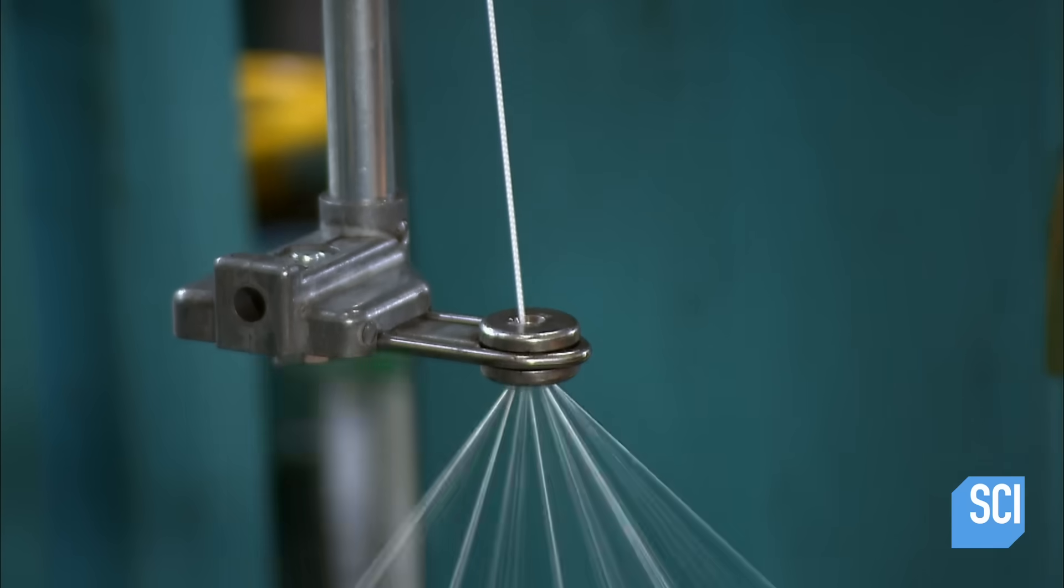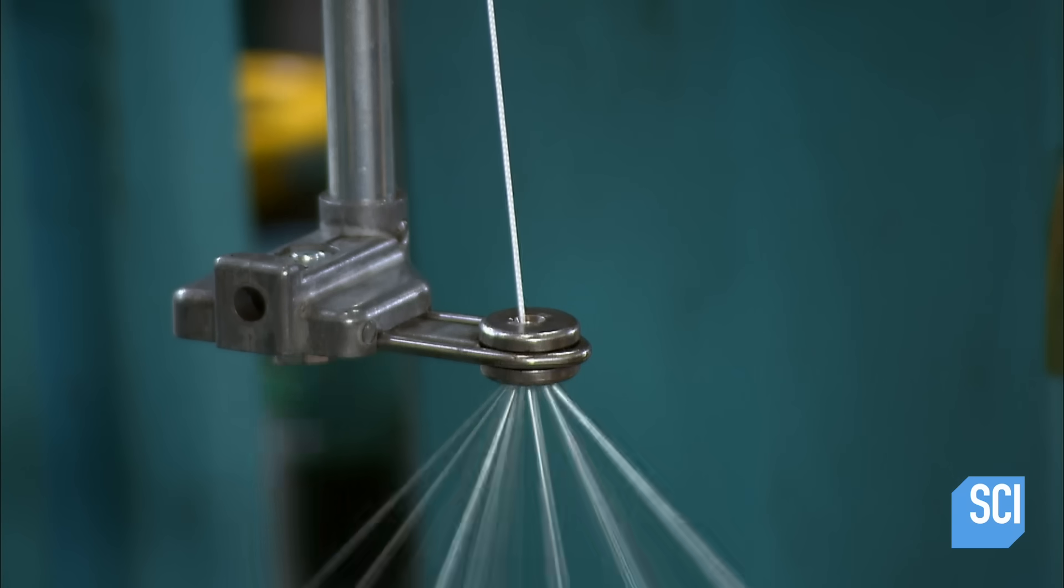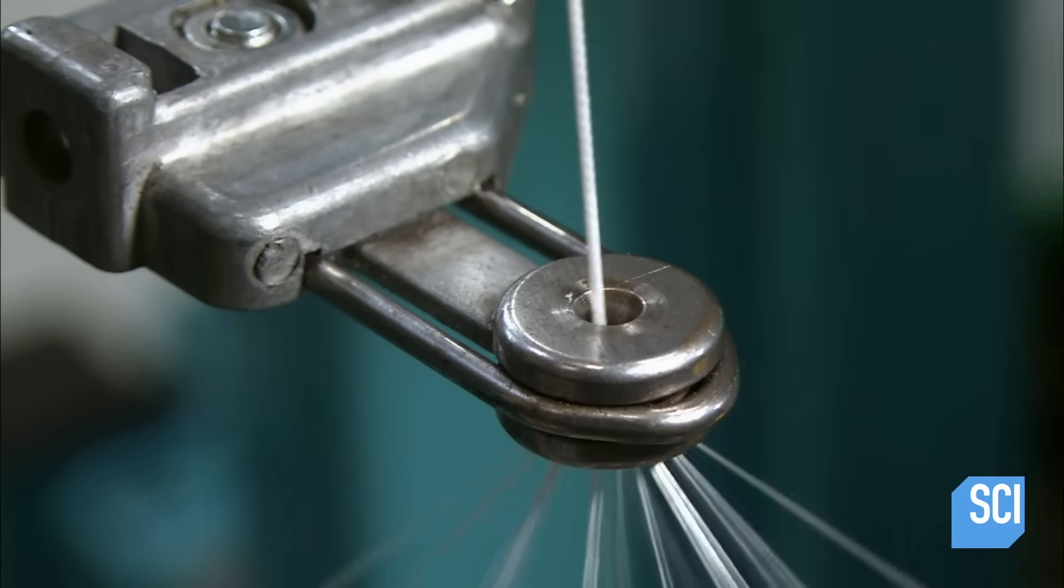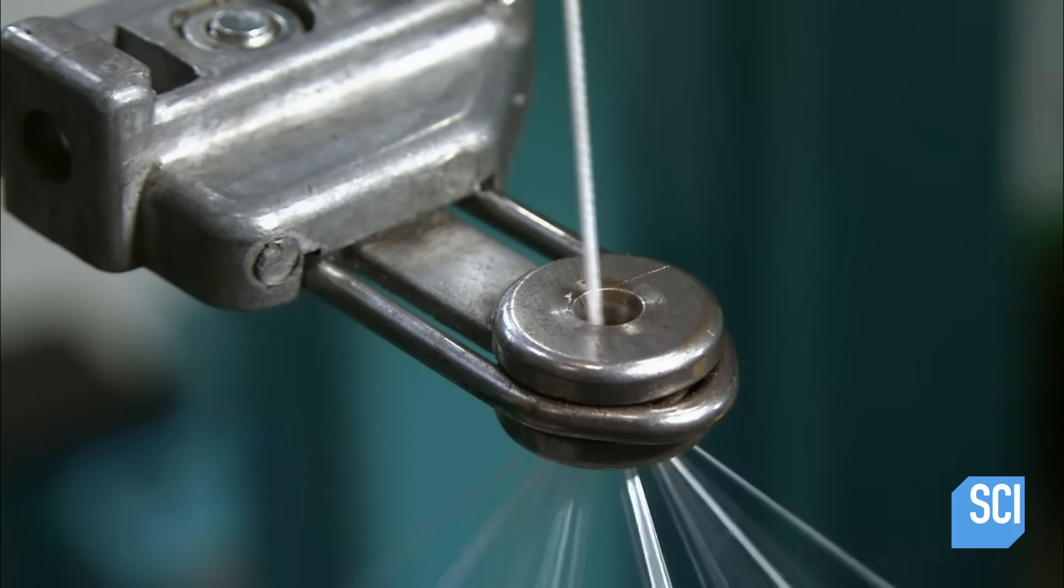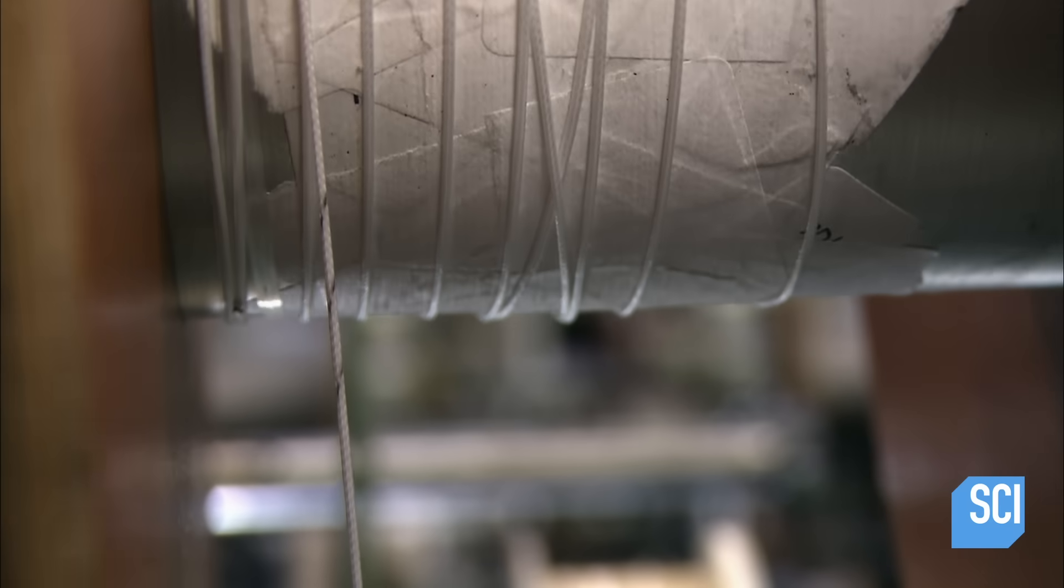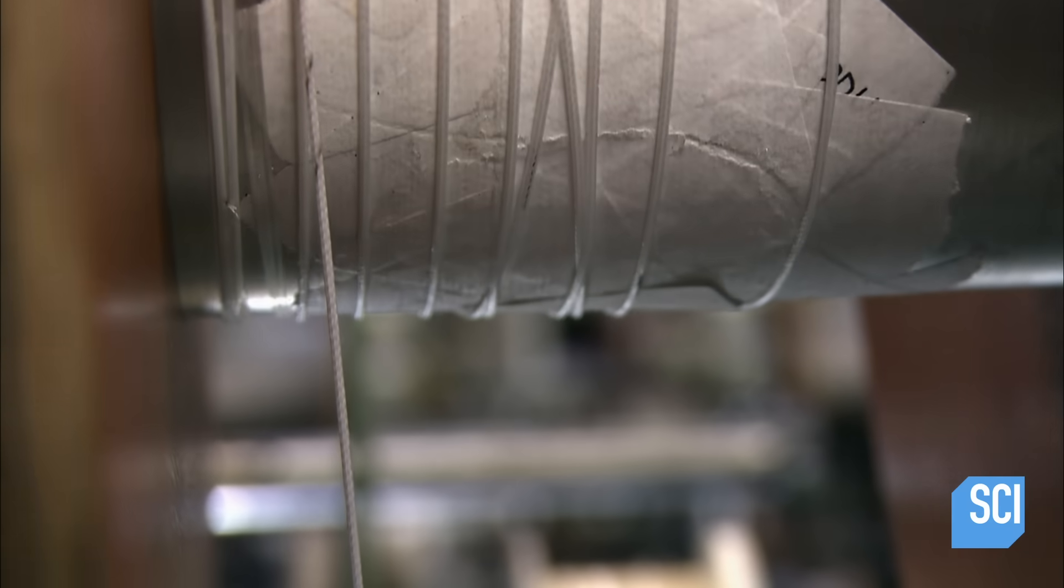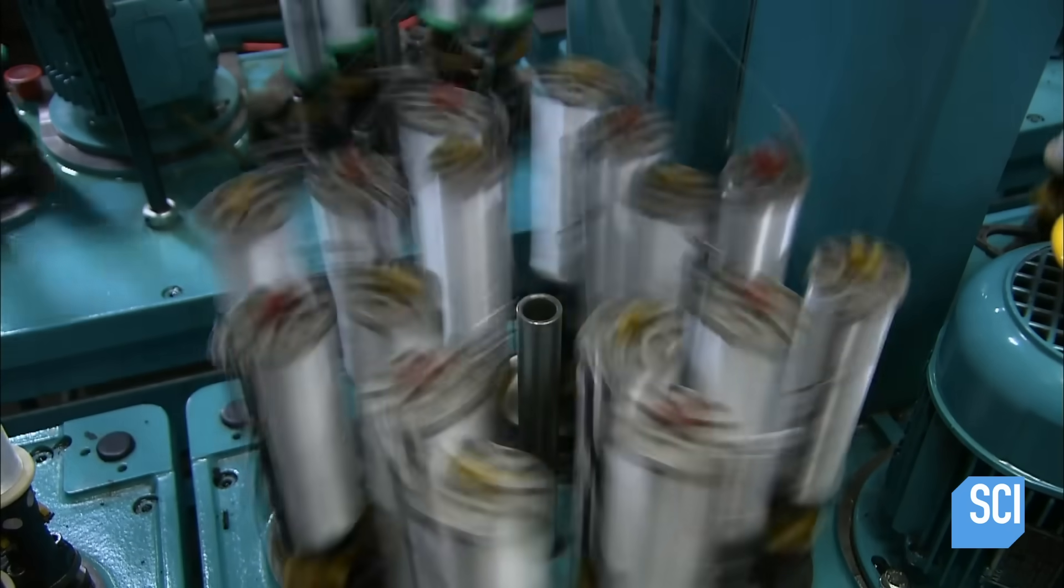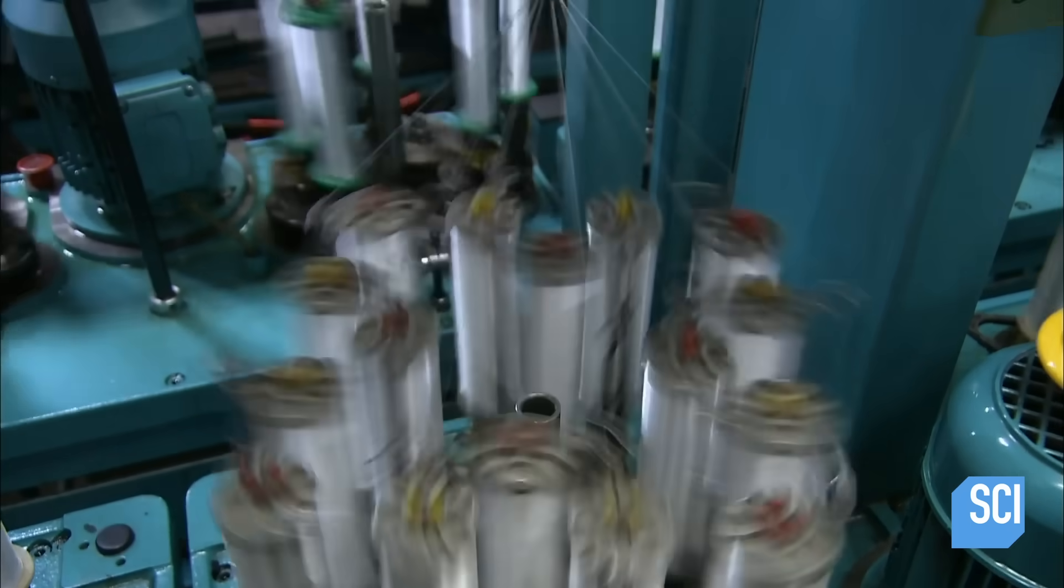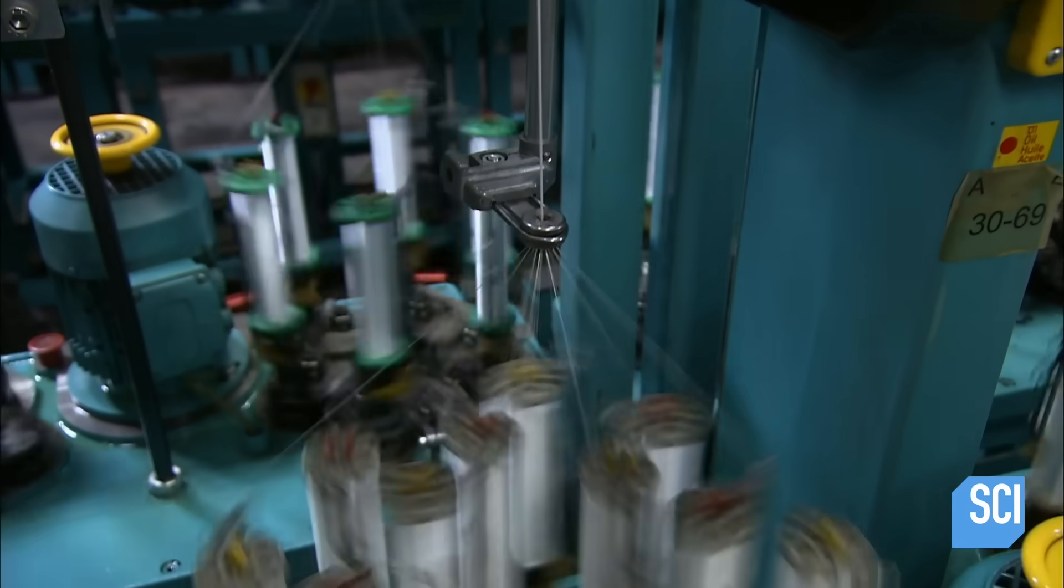There are 4,500 braiding machines in operation at this factory. Producing a tight braid is slow work. It takes about 10 days to braid a 7,500-foot section of fishing line.